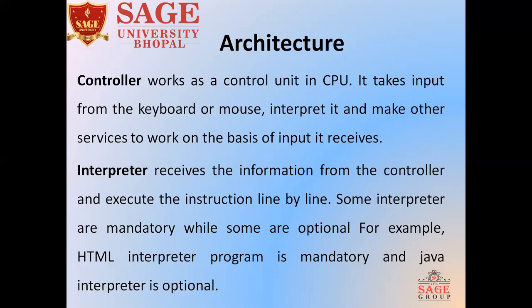What does the Interpreter do? The Interpreter receives information from the Controller and executes instructions line by line. As we know, an interpreter processes instructions line by line, whereas a compiler processes the entire program at once. In a web browser, some interpreters are mandatory while some are optional. For example, an HTML interpreter is mandatory, while a Java interpreter is optional.